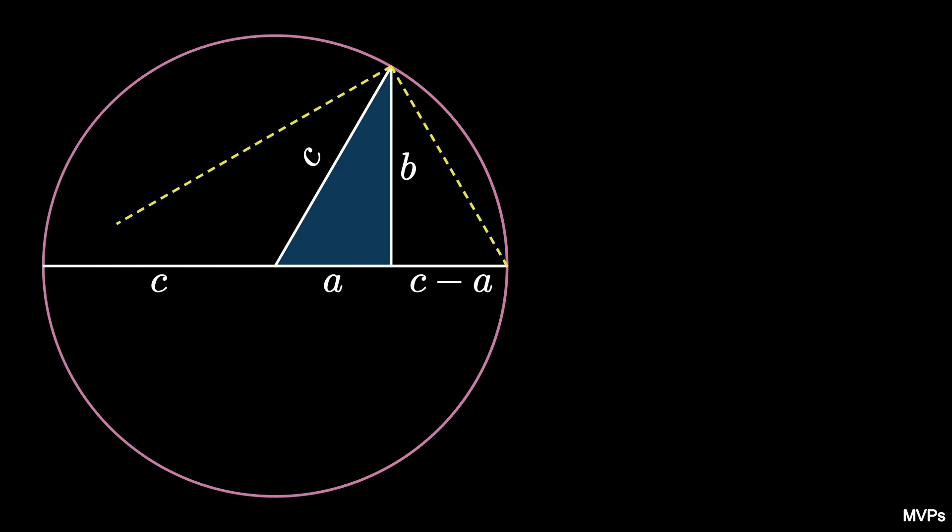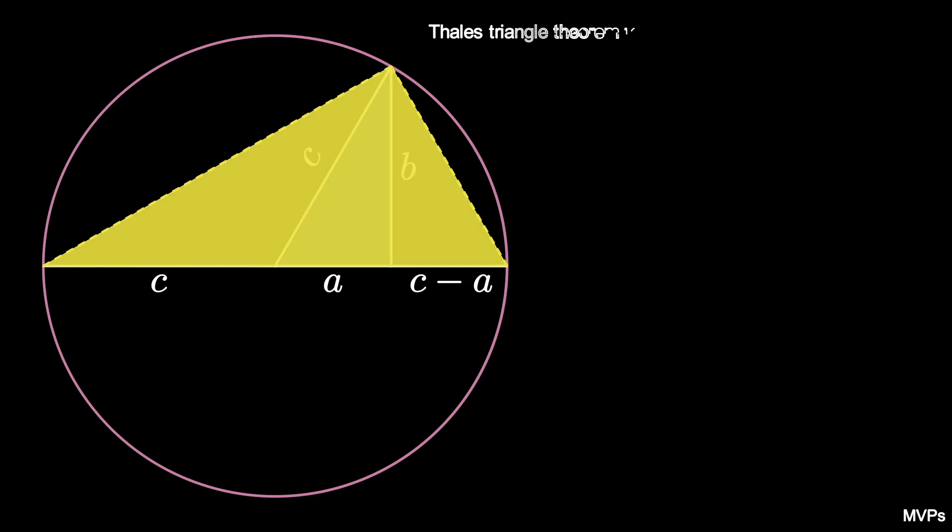Connecting the lines from the ends of this diameter to the top of the triangle yields a right-angled triangle according to Thales' triangle theorem.